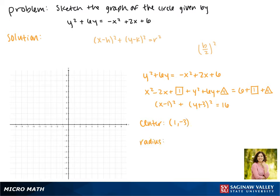Now we can find the radius. Since r squared equals 16, that means r must be 4.